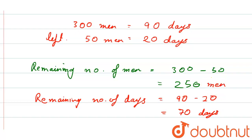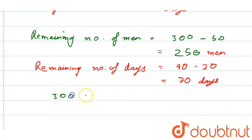Now, by that we can write, 300 men had provisions for 70 days.